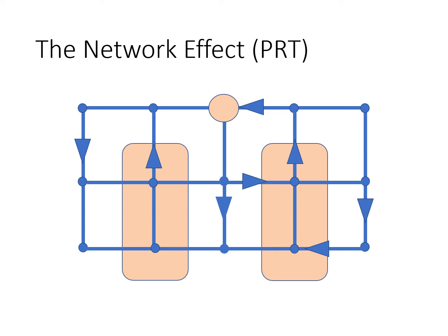With PRT, the same area would be covered with one-way interconnected lines, serving stations spaced about one half mile apart. Any pod could access any station, so the need for transfers vanishes. Everyone would be within about a five-minute walk of a station, so the poorly serviced areas also vanish.